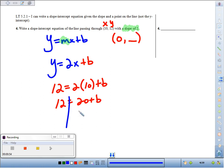We need to solve for that b, the y-intercept. We subtract 20 on both sides. We find out our y-intercept is 12 minus 20 is negative 8.